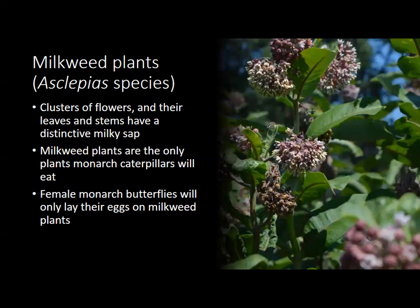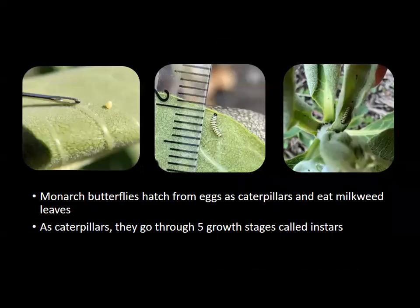Milkweed is the only plant on which you'll find monarch butterfly eggs. These eggs are very small and slightly elevated from the leaf — you can see the cone shape extending slightly off the leaf, not laying flat. We also have a small picture of a caterpillar and a picture of a caterpillar on the milkweed plant near the buds area.